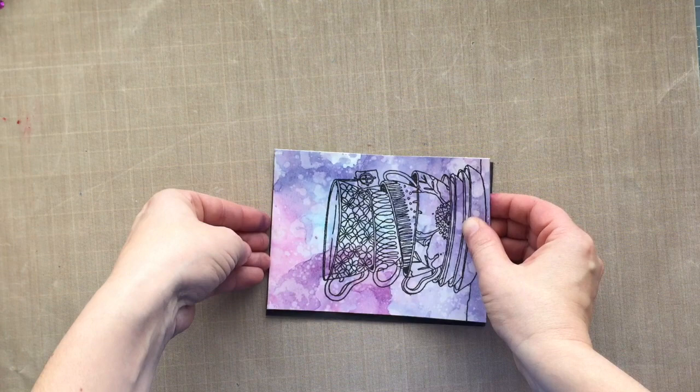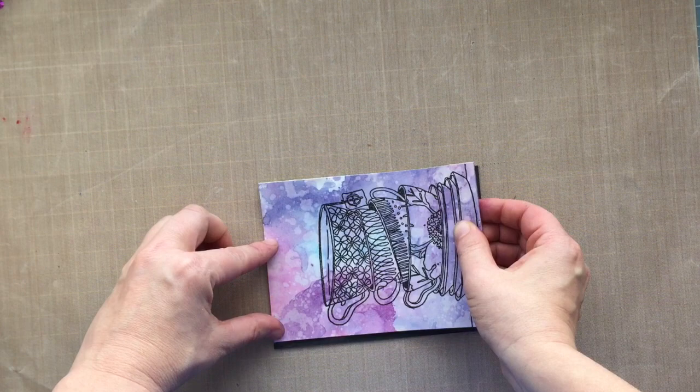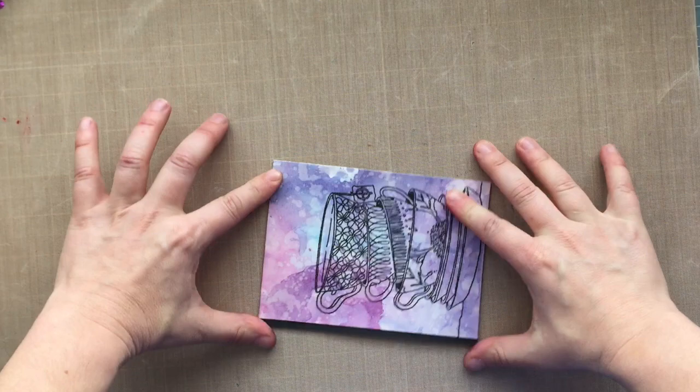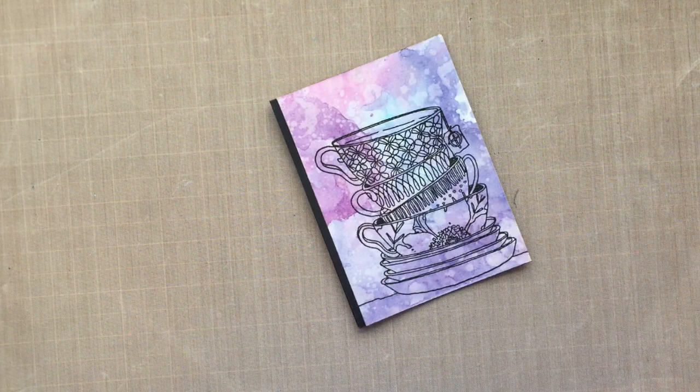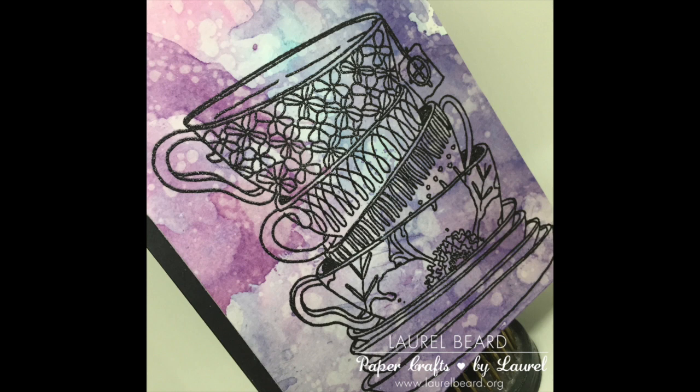The card base is a 4 1⁄4 by 5 1⁄2 top folding card. So I'm adhering my card down flush to the right-hand side. So I have a little bit of that black border shining through. The watercolored panel that we're working off of was 4 by 5 1⁄2. So I've got that nice quarter-inch border there of the black card base shining through. And that completes the card for today. So I hope you'll check out the class over at Creativity Grows Here. It's called In the Mood. And I think that you're going to love it. Thanks for watching.